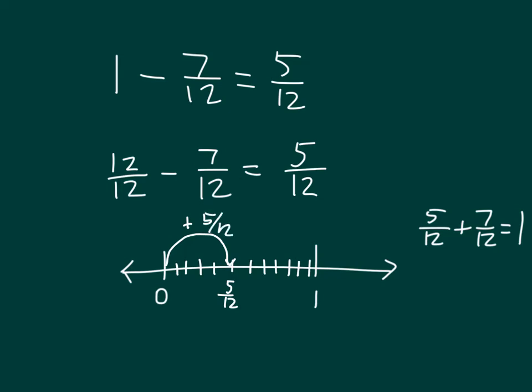And then, just add the rest. That's 6 twelfths, 7 twelfths, 8 twelfths, 9 twelfths, 10 twelfths, 11 twelfths, and 12 twelfths. When we added 7 more twelfths.